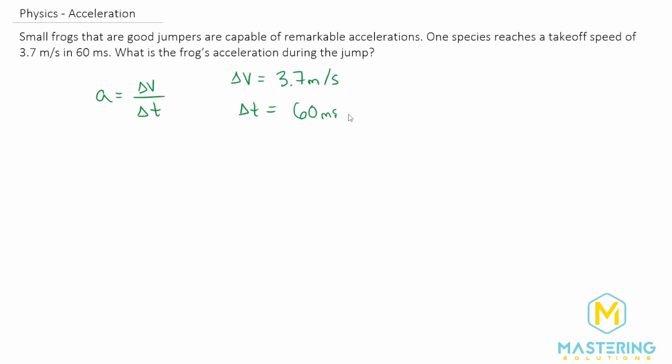But they're making it a little bit more difficult on us because milliseconds is not in standard units, but we can change that simply by writing what milli stands for, which is 10 to the negative 3. So 60 times 10 to the negative 3 seconds.